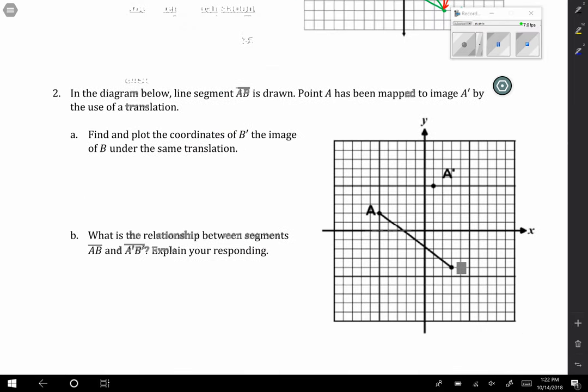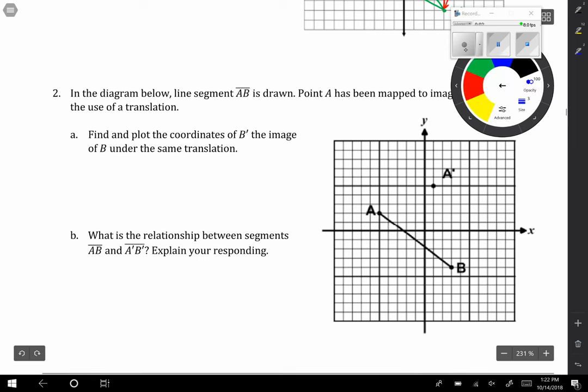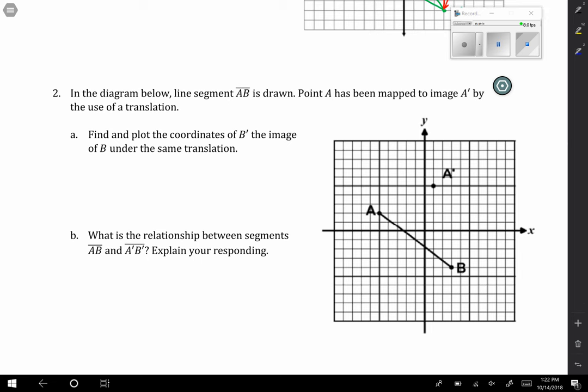Number two gives us this diagram of a line segment, segment AB. It says point A has been mapped to point A prime by the use of a translation. So how did we get from A to A prime? Here's your vector. What did I do to get from one point to the next? I went to the right one, two, three, four, five, six, and I went up three. So the translation is to the right six, up three. It would be six comma three. If I do the same thing for B, one, two, three, four, five, six, up three, here's B prime. So B prime is the coordinate nine, negative one.